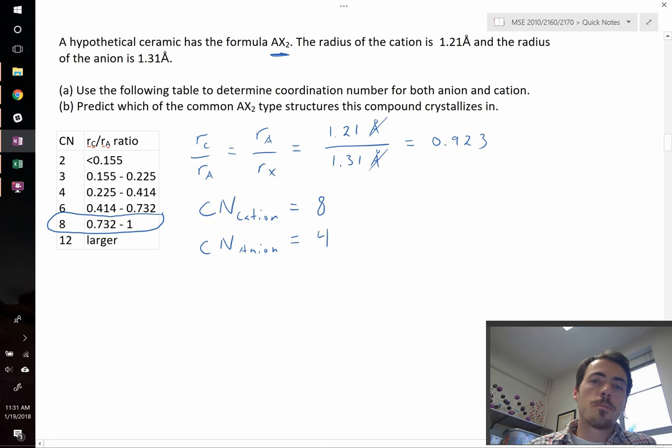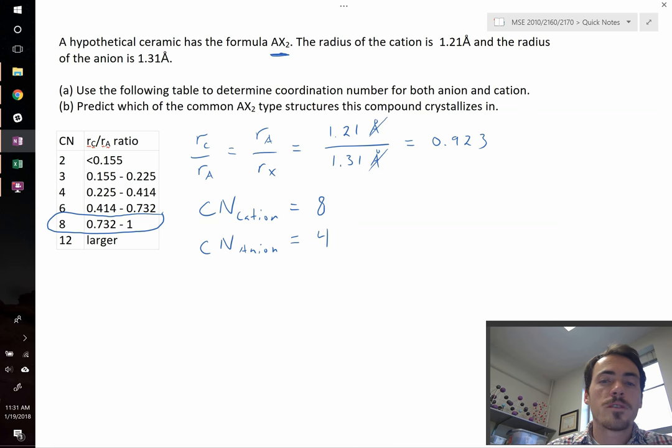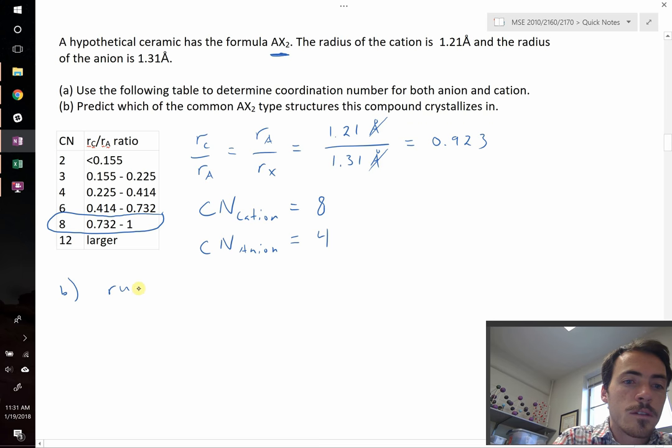Now that we know that we've solved part A, we can move on to part B. Part B says, use these to predict which of the common AX₂ type structures this compound crystallizes in. For this, the two common crystal structures that are AX₂ is rutile and fluorite.